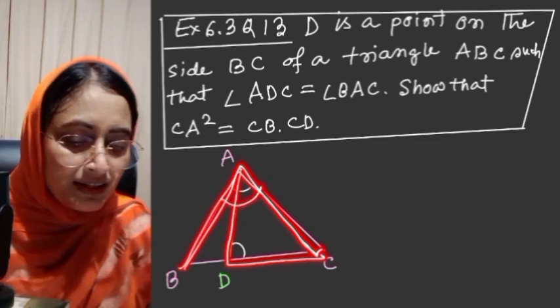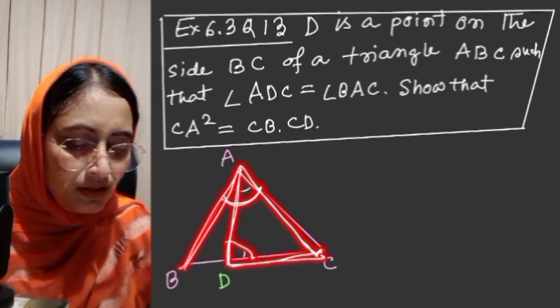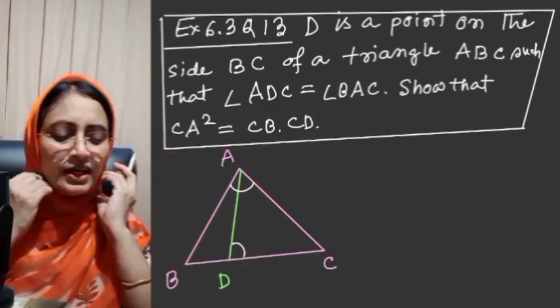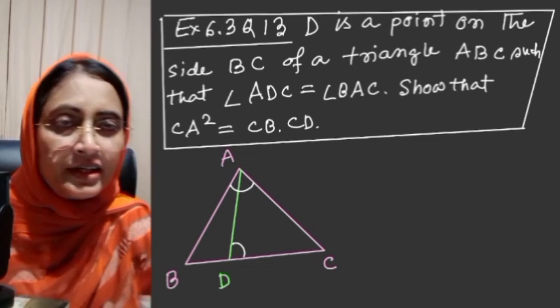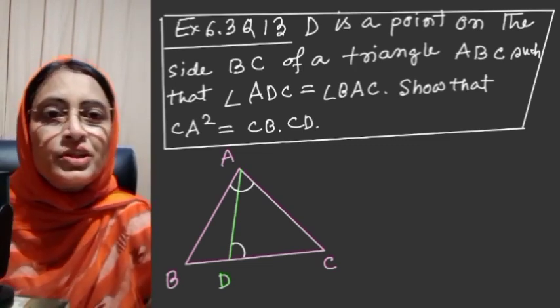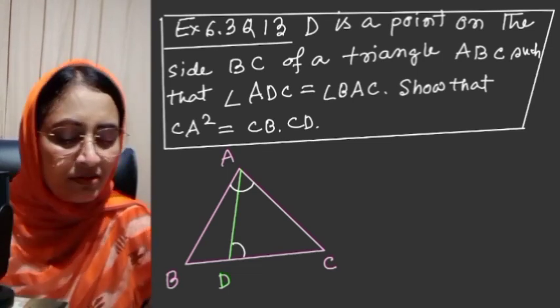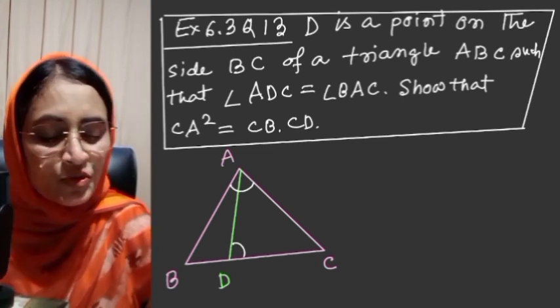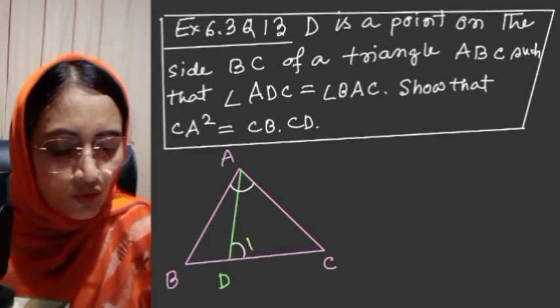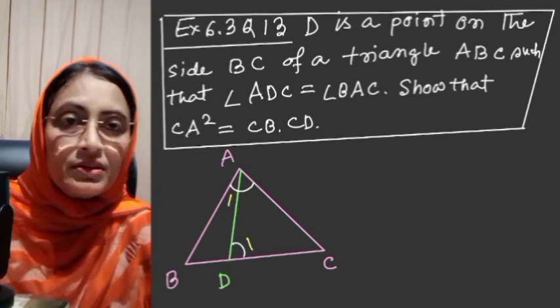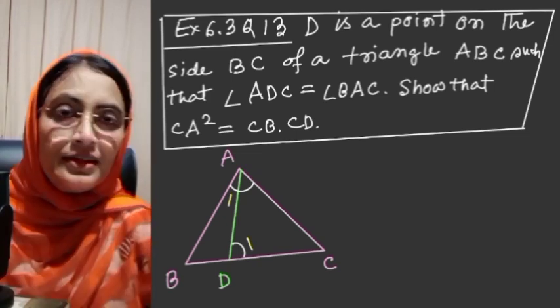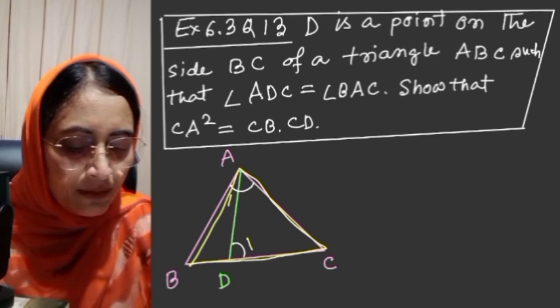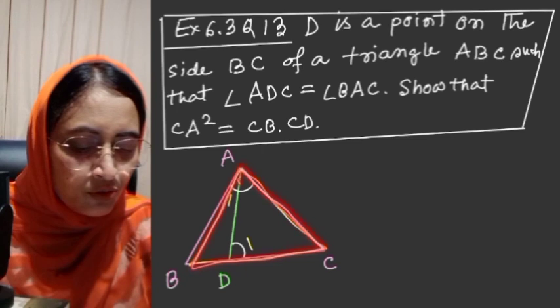Show that CA² equals CB into CD. This becomes very easy if we identify the corresponding sides. If two triangles are similar, their corresponding sides will be proportional, making it easy. One angle here equals one angle there.